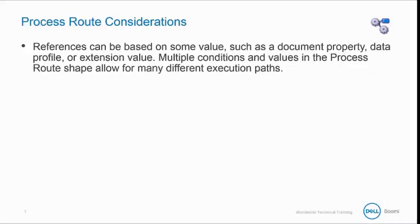Process routes enable you to execute another process from within a process dynamically, based on a reference that is set at runtime. The reference can be resolved based on some value, such as a document property, data profile, or an extension value. You can define multiple conditions and values in the process route shape, allowing for many different execution paths. The process route component manages those exception paths.